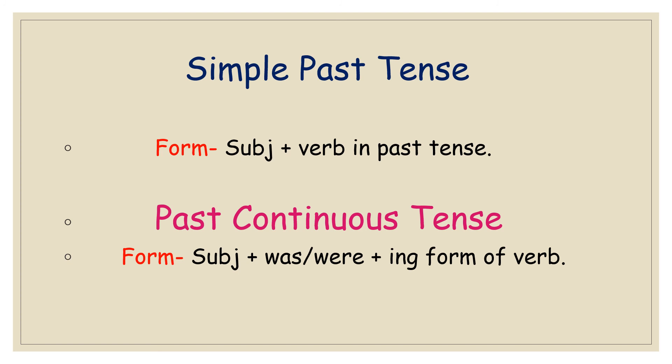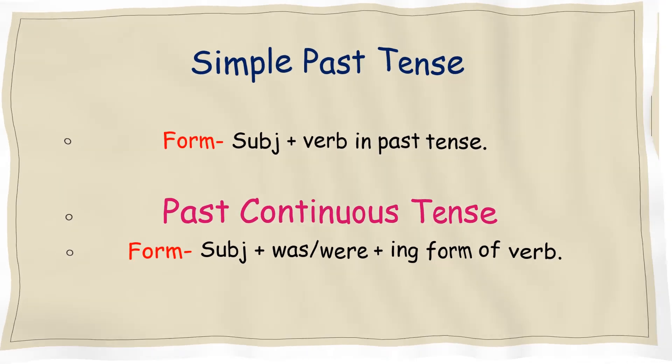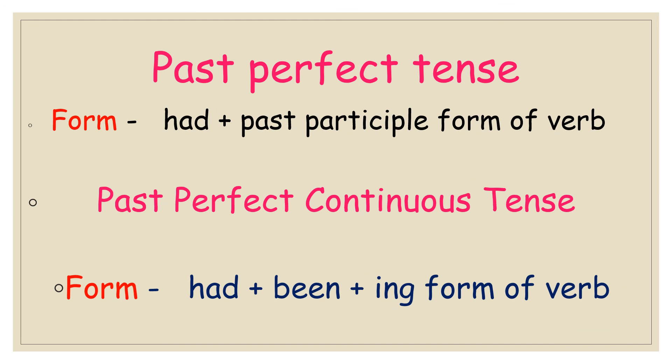Let us sum up the forms of tenses again. For simple past tense: subject + verb in the past tense. For past continuous tense: subject + helping verb (was/were) + the '-ing' form of verb. For past perfect tense: subject + had + past participle form of verb. For past perfect continuous tense: subject + had + been + the '-ing' form of verb.